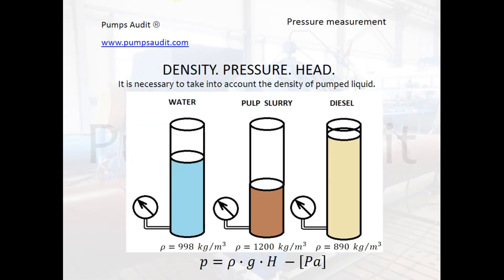When you pump a liquid that has a density different from that of cold water, it is necessary to take into account the density when calculating the head. This slide demonstrates how density influences the pressure. The pressure is the same for liquids with different densities — water, pulp slurry, and diesel — but the heads are different because of their different densities.